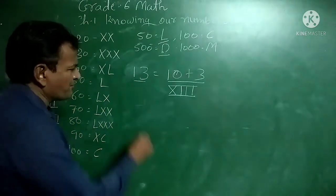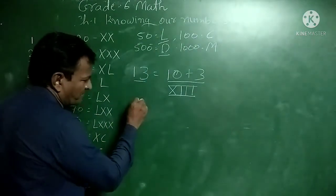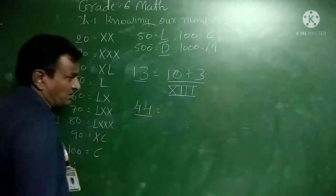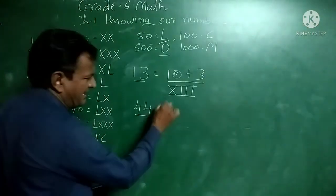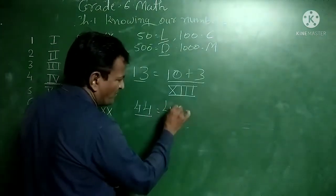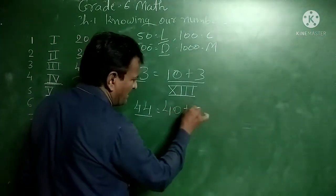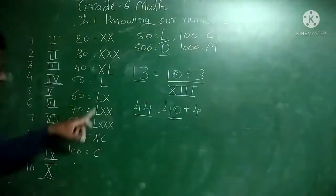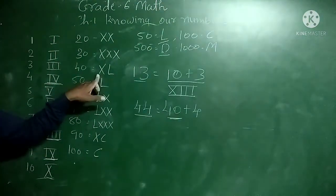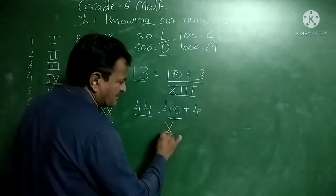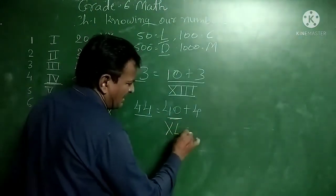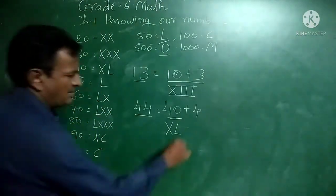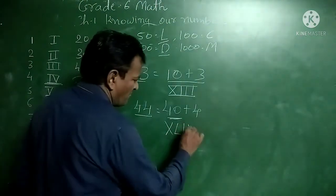Next, we write 44. How do we write 44? We write it as 40 plus 4. For 40, the symbol is XL. For 4, the symbol is IV. So 44 in Roman numerals is XLIV.